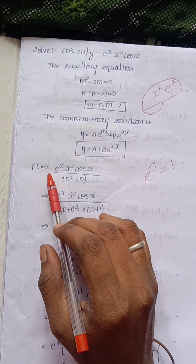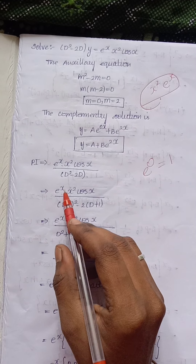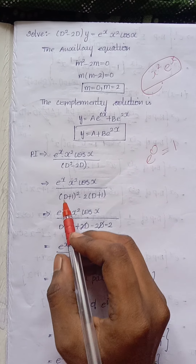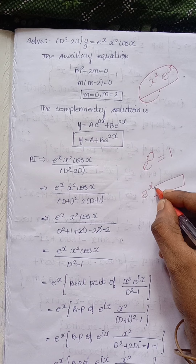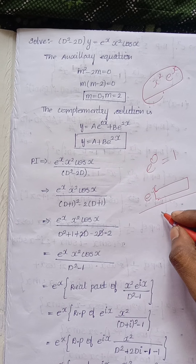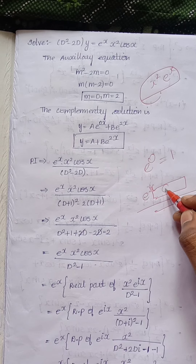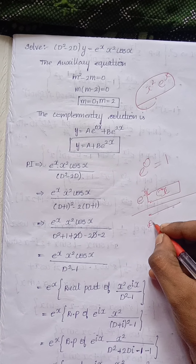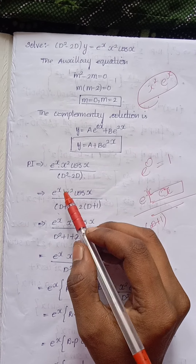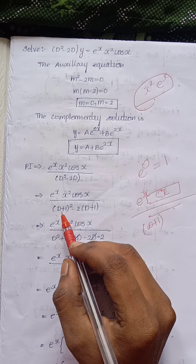Now taking the particular integral: e^x times x squared times cos x, divided by (D squared minus 2D). Since we have e^x multiplied by an x-dependent term, we apply the shift method — instead of D we put D plus 1. So we get e^x times x squared times cos x divided by (D+1) squared minus 2(D+1).